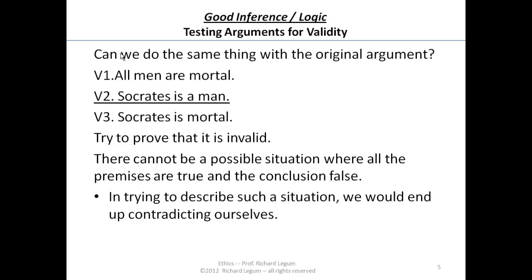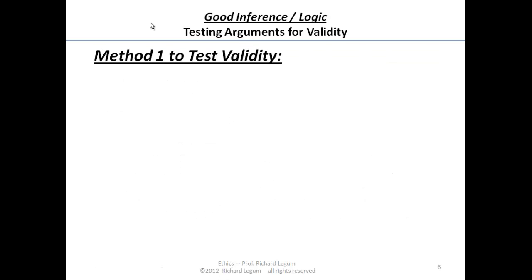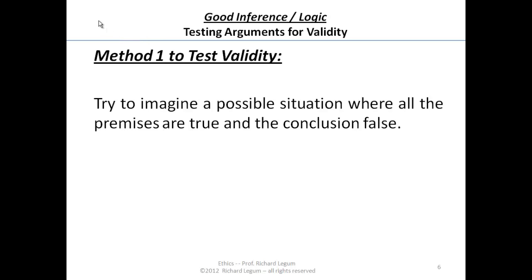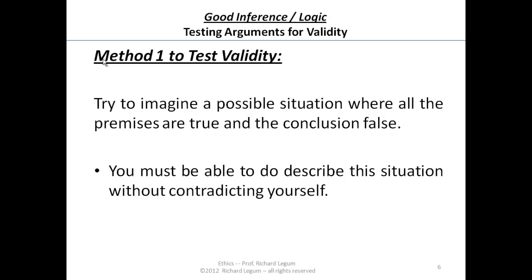This test of validity does work, and it suggests the first method for testing validity: try to imagine a possible situation — one you can describe without contradicting yourself — where all the premises are true and the conclusion is false. You can't say Socrates is a man and he's not a man; you can't say all men are mortal and some men are not mortal. That would be contradicting yourself.